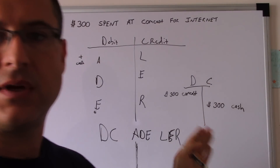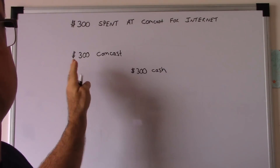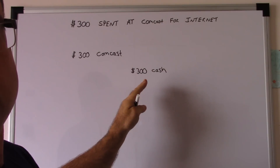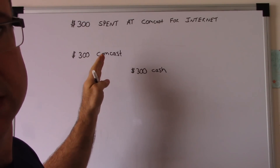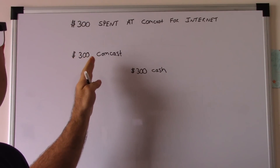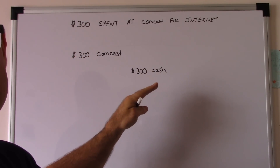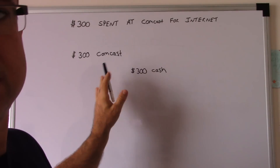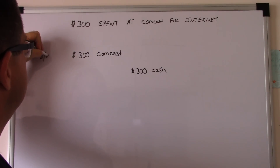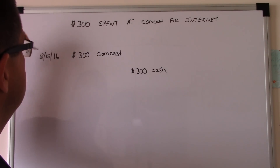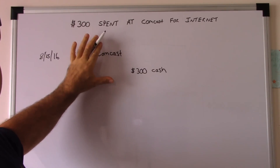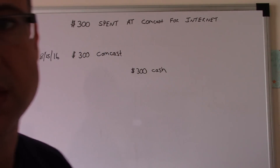Here's the journal entry: Debit $300 Comcast, Credit $300 Cash. We debited Comcast because it's an expense, so that goes in the debit column. We credit cash because it's an asset leaving. You'd have a date here — like 8/15/16. Debit is always to the left, and your credit is on the right-hand side.